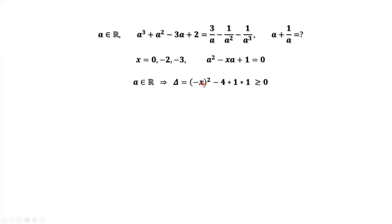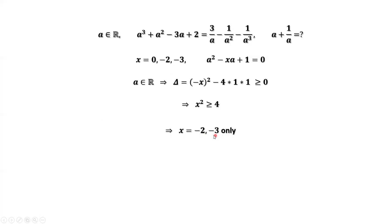Now we check which x values satisfy x squared greater than or equal to 4. For x equals 0: 0 squared equals 0, which is less than 4 — not true, so 0 is not a solution. For x equals negative 2: negative 2 squared equals 4, and 4 is greater than or equal to 4 — true. For x equals negative 3: negative 3 squared equals 9, and 9 is greater than 4 — true. Therefore, we have two valid solutions: x equals negative 2 and x equals negative 3. Since x equals a plus 1 over a, this implies a plus 1 over a equals negative 2 or negative 3, where a is a real number. That's all — thanks for watching and see you next time.